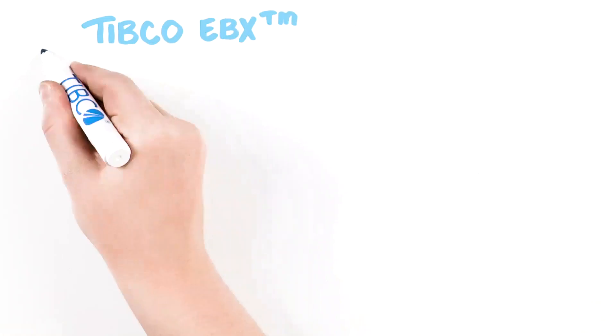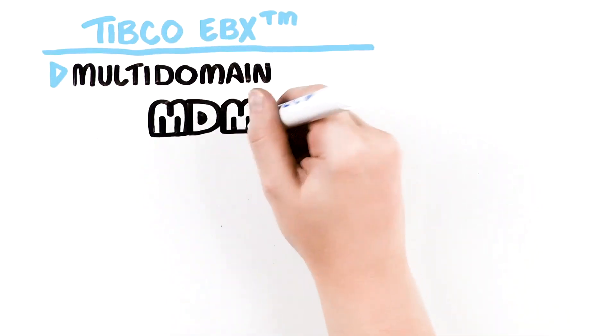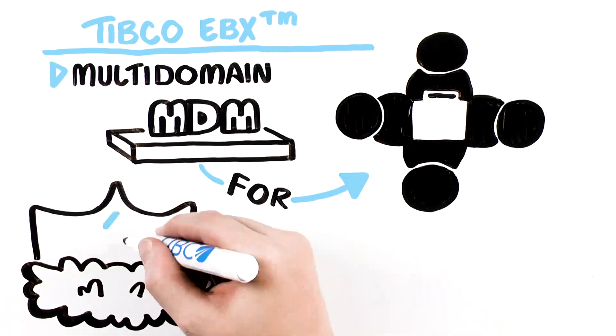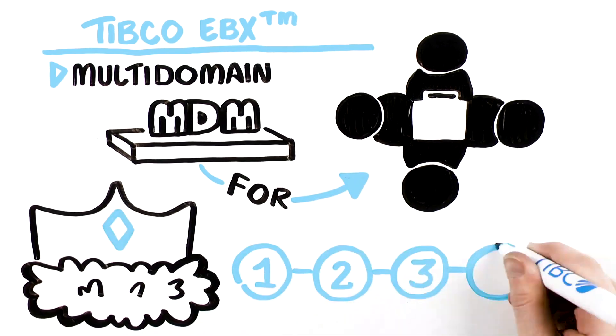To summarize, EBX is a multi-domain MDM platform designed for collaboration among business teams with governance features covering the entire process end-to-end.